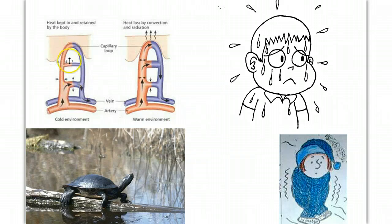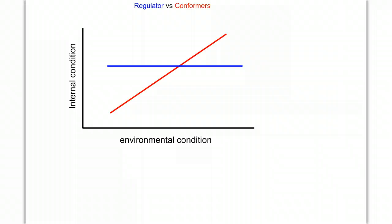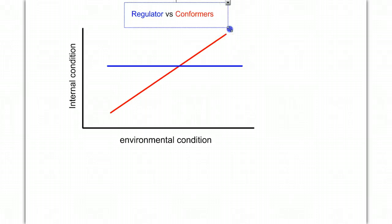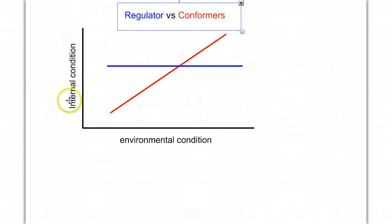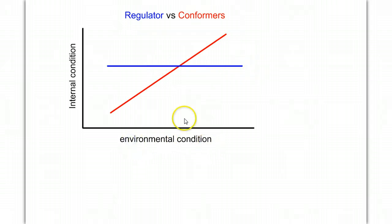Looking at vasodilation versus vasoconstriction, sweating, and shivering — here's also a turtle basking in the sun. One more concept before we finish: regulators versus conformers. A regulator is an animal whose internal condition remains constant even as environmental conditions change. A conformer's internal condition changes with the environment. That's our quick video on temperature regulation and the key terms we need to know. We'll spend very little time on this in class, so please watch the video, take some notes, and I hope it explains everything well.